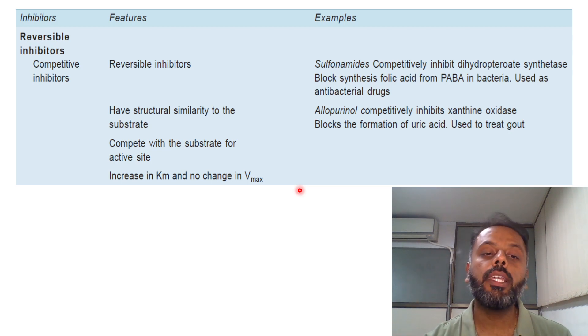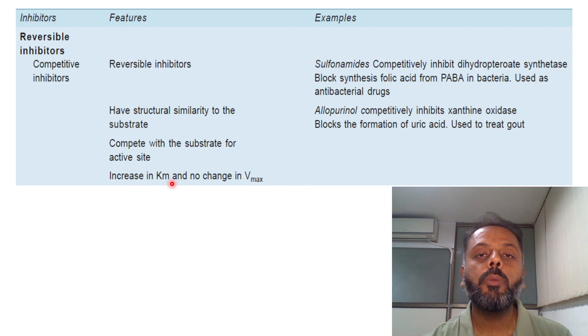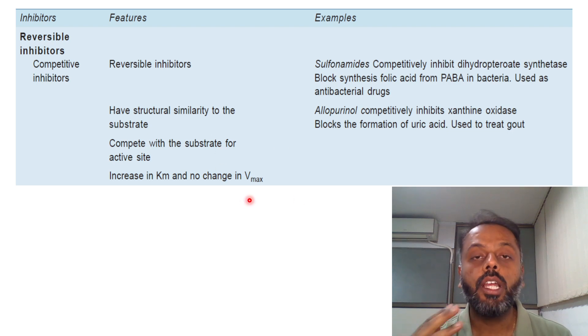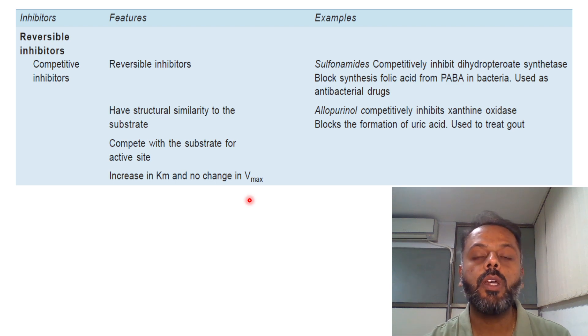There will be an increase in the KM value, but there will be no change in the Vmax. These are the features of competitive type of enzyme inhibition. Now what are the various examples of competitive type of enzyme inhibition?